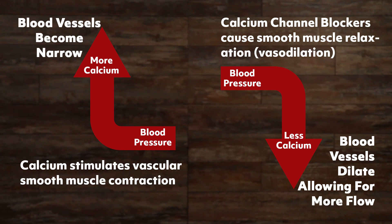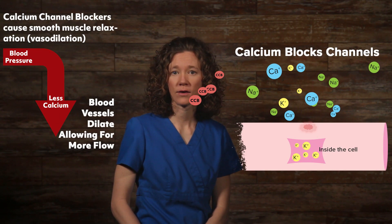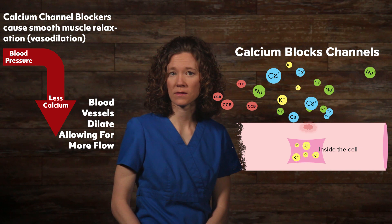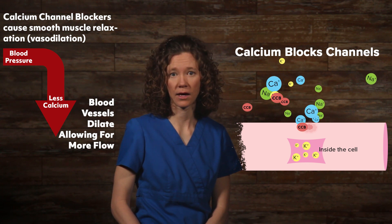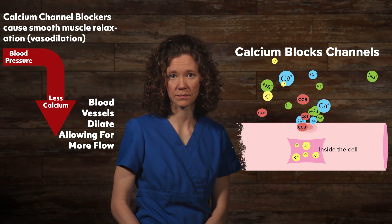Calcium channel blockers are a class of drugs that block calcium from entering into the cells of heart and blood vessel muscles. So, when a patient has high blood pressure, angina, or heart arrhythmias, calcium channel blockers block calcium from entering the cell by binding to the L-type calcium channels.